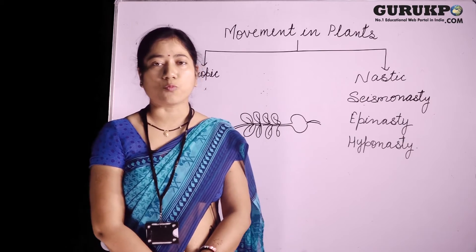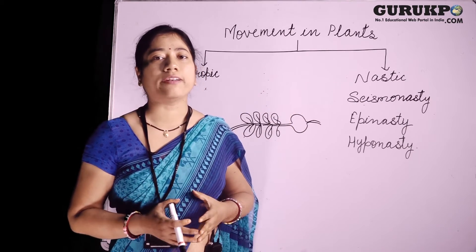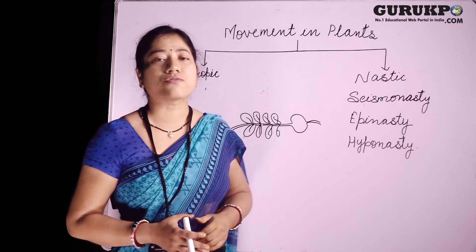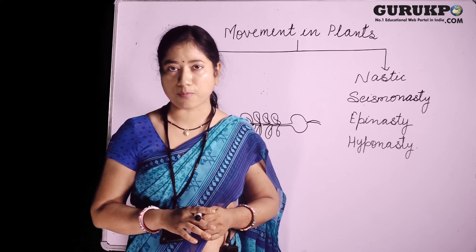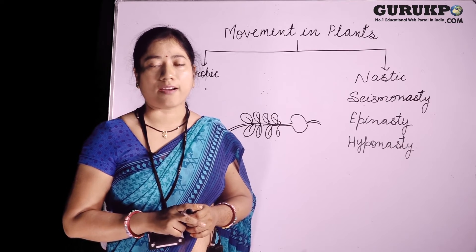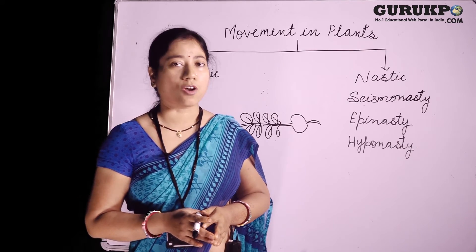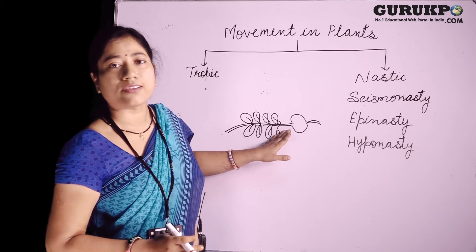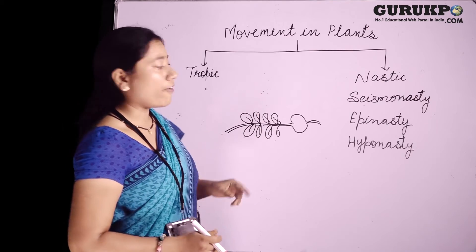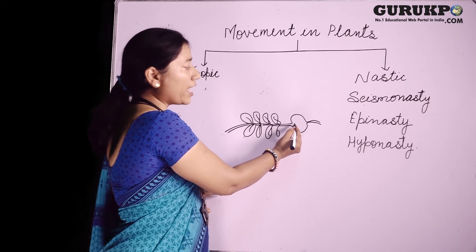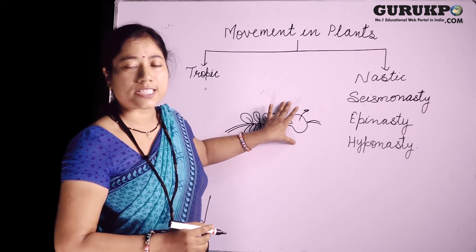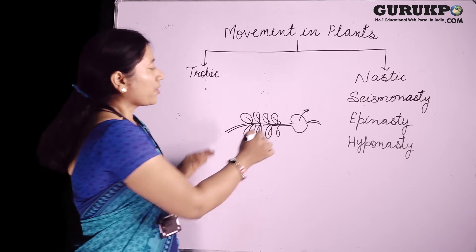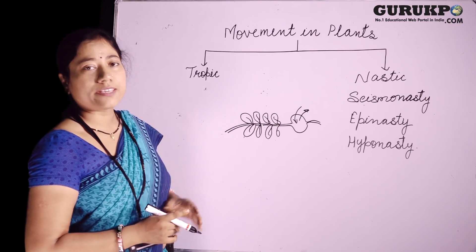Nastic movements are non-directional movements, meaning their direction of movement is not decided by any external stimuli. These nastic movements include seismonasty, epinasty, and hyponasty. The best example of seismonasty is Mimosa pudica, also known as the touch-me-not plant. When we touch the touch-me-not plant, its leaves fold and fall down. Why does this happen? Because there is a structure called pulvinus present below the leaves. This pulvinus is tightly filled with water, which keeps the leaves upright. When we touch the leaves, a current flows towards the pulvinus and water comes out. Due to this, it loses its turgidity and the leaves fall down. After 15 to 20 minutes, the water comes back inside the pulvinus and the leaf becomes upright again.